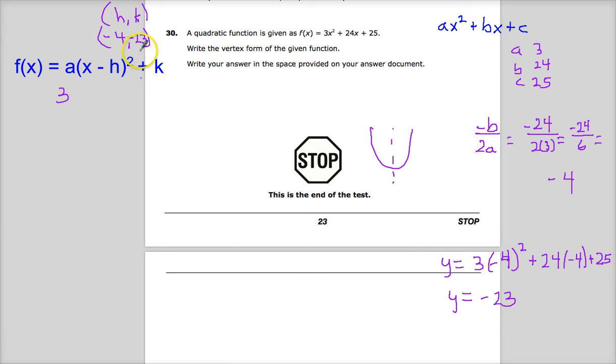Now, the negative 23 goes in easily because I'm going to substitute negative 23 in for k. The only real shakeup is I substitute in negative 4 for h. So, it's minus negative 4. So, this becomes x plus 4. And there you go. Easy peasy.